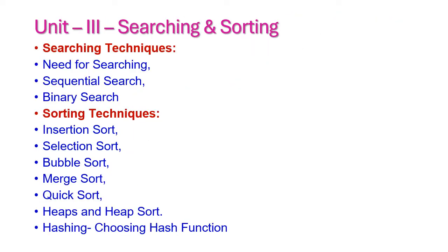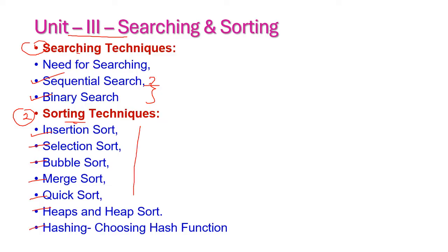Before starting today's class, we will see the overview of the third unit. In the third unit, there are two important sections. The first one is Searching and the second one is Sorting. Under searching, two important techniques are Sequential Searching and Binary Searching. Under sorting, the techniques are Insertion Sort, Selection Sort, Bubble Sort, Merge Sort, Quick Sort, Heap Sort, and Hashing.